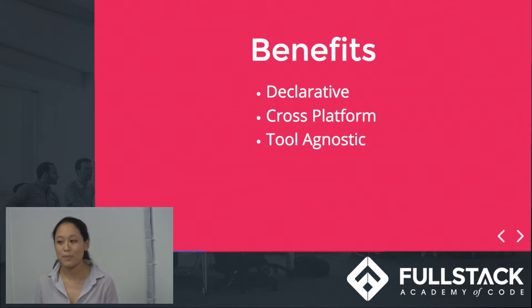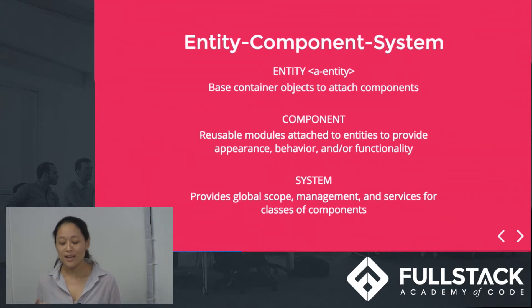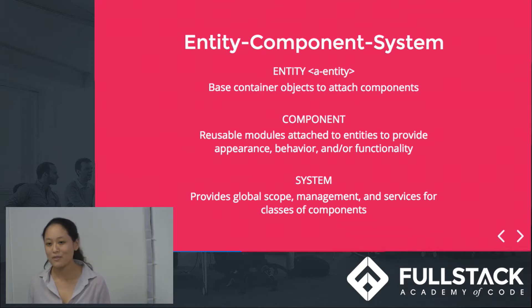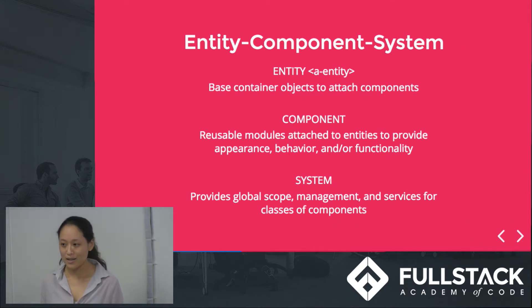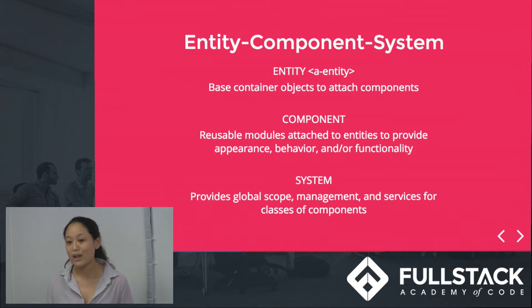One of the biggest benefits is the pattern it uses, called ECS — the Entity Component System. By entity, it means your base container object that you can attach components to. Components are reusable modules that you attach to your entity to give it appearance, behavior, and functionality. The entity by itself won't look like anything or do anything until you put a component on it. For example, if you put a geometry component that says it's a box and a material component that says its color is red, it will straightforwardly be a red box. And at the end you have your system, which provides global scope management and services for classes of components.